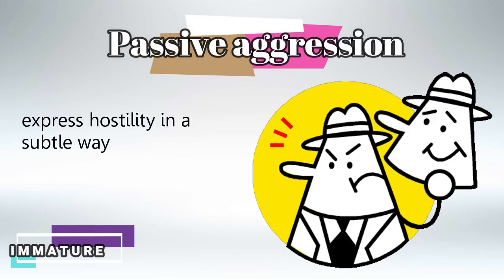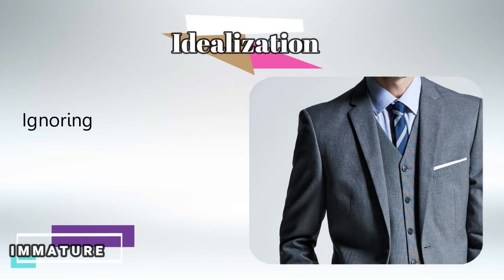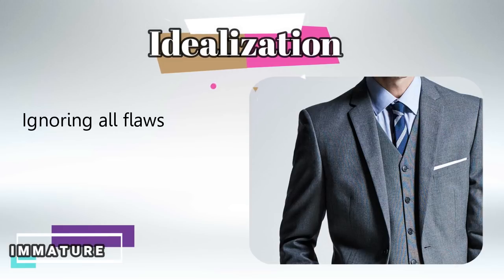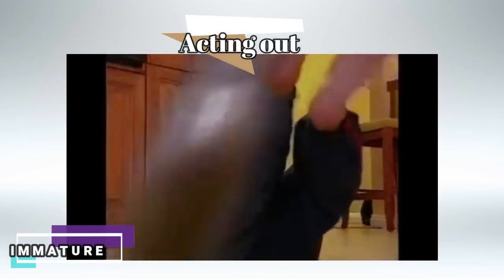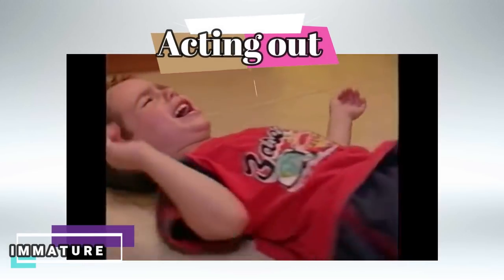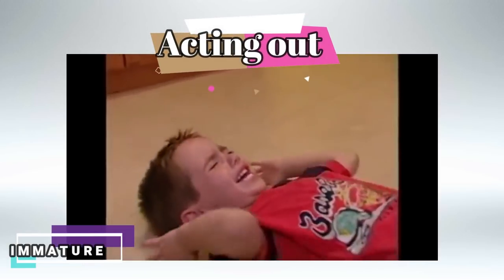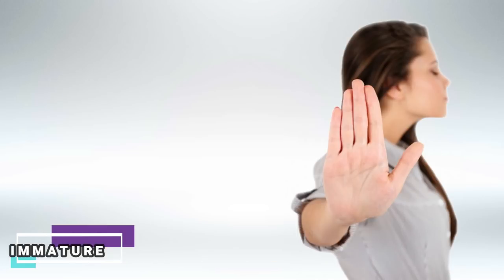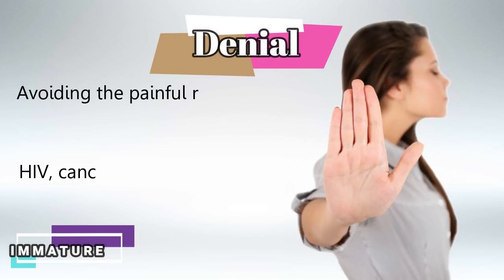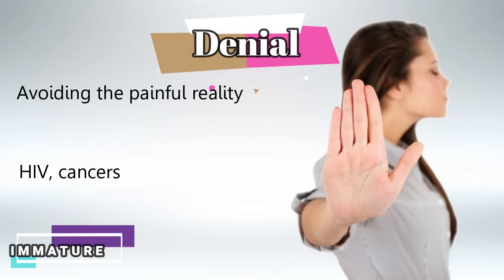Passive aggression needs no definition — it's just being subtly hostile. Idealization is thinking of someone or something as completely perfect and ignoring all its flaws. Acting out is basically making a tantrum. Finally, the last immature defense is denial, which is avoiding a painful reality — commonly seen in patients newly diagnosed with HIV or cancer.